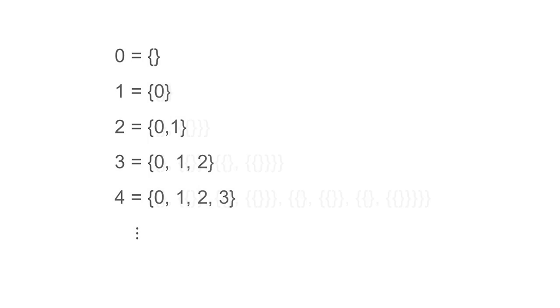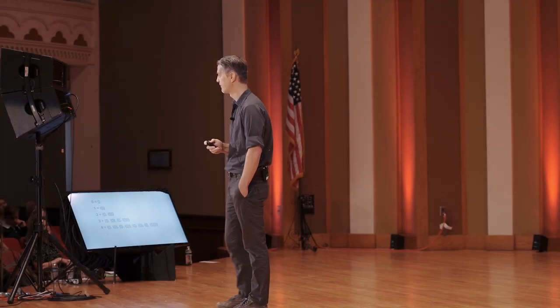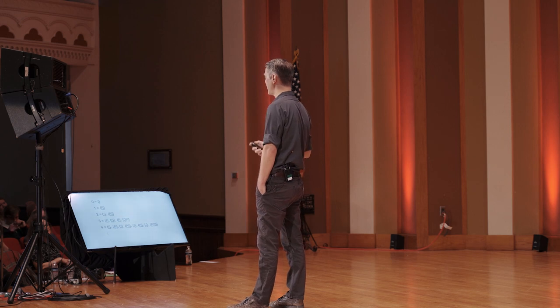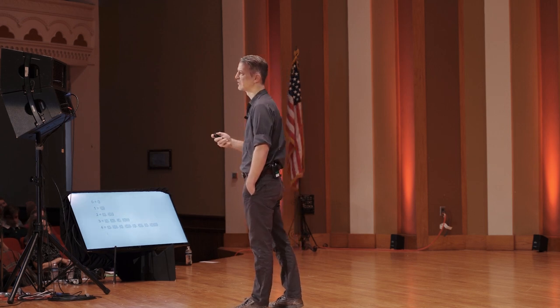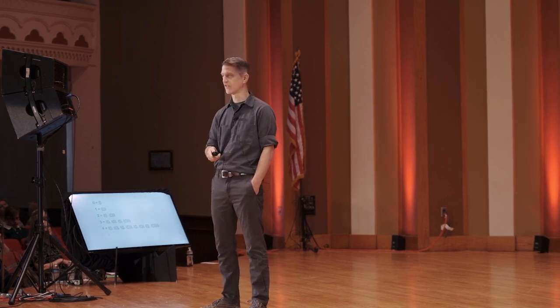If we want to see these numbers explicitly as sets, then this is what we would see: numbers defined as sets of sets, nested within each other over and over again, eventually terminating with the empty set. This might seem a little weird, but most things do seem weird if you look at them closely enough. In any case, what we have here is a mathematician's answer to our original question — what is a number? Our answer: numbers are sets.